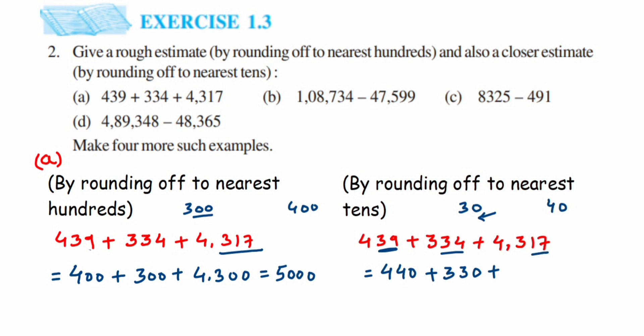For 4317, we check 17 — it lies between 10 and 20 but is closer to 20, so 4317 becomes 4320. Adding them up: 440 + 330 + 4320 = 5090. That was the first question.